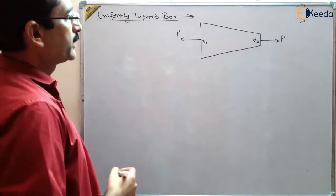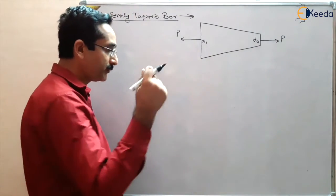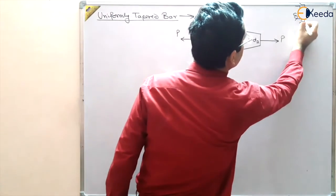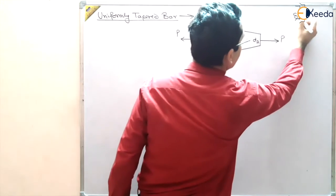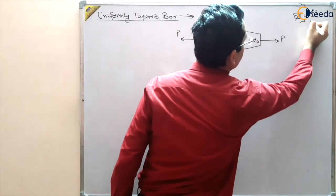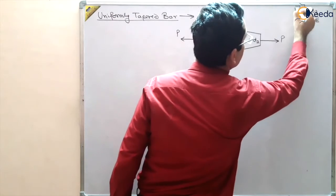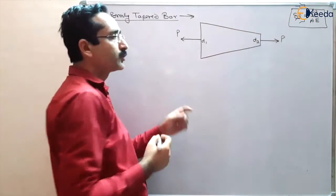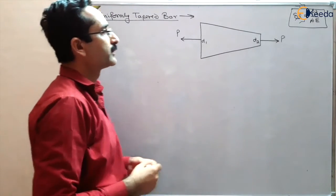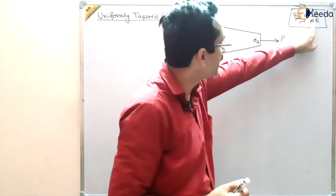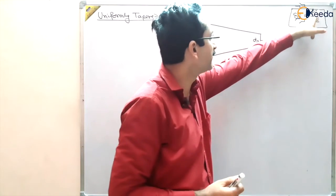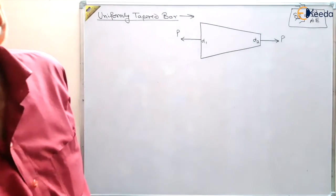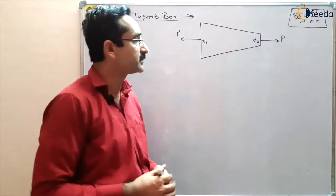So how do we find out the elongation in this bar? Our main formula, as you know, is delta L equals PL upon AE. But can we apply this formula directly here? No, because the area of cross section A is not uniform. When we derived this formula, the area of cross section was uniform, but here the area of cross section is not uniform.